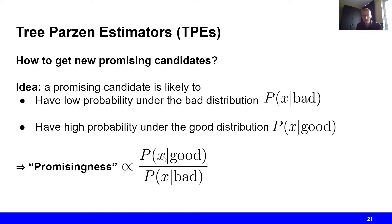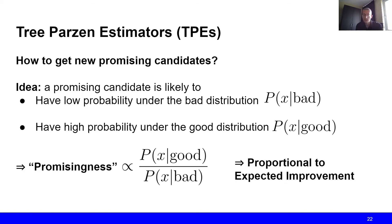Note that if the probability under the bad distribution is low, the promisingness score increases, and it also increases when the probability under the good distribution increases. They have shown in their paper that this ratio is actually proportional to the expected improvement.